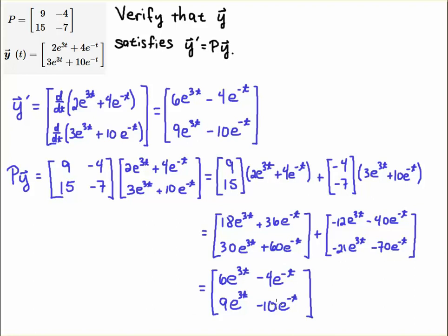And notice that the result of P times y was the same as y prime, so we've just verified that y prime is equal to P times y, where y is given by this solution, this vector, and ODE is y prime is equal to Py. So this is how you check your solutions for first-order differential equations when they're written as first-order linear systems of differential equations. Good luck.